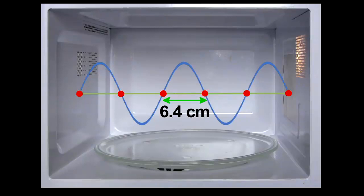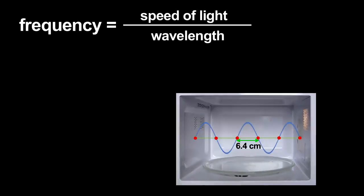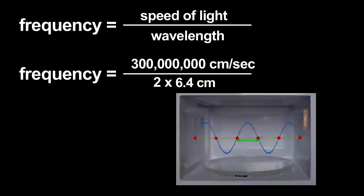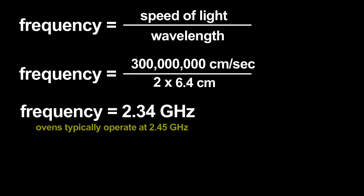Using that wavelength, I can estimate the microwave radiation's frequency. The frequency is related to the wavelength by the speed of light. I get an answer that only has a 4 or 5 percent error. Not bad for this primitive measurement.